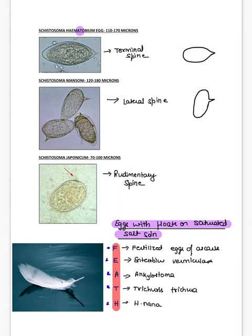Schistosoma, though a trematode, does not have an operculated egg — instead it has spines. The three species are S. haematobium, S. mansoni, and S. japonicum. Haematobium has 'T' in the name, indicating a terminal spine. Mansoni — 'sona lage' — has a lateral spine. Japonicum has a rudimentary spine.